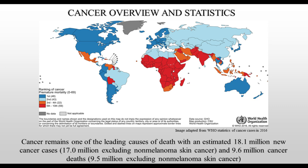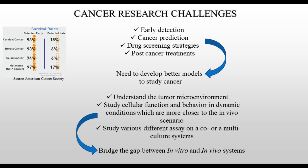Here are cancer statistics obtained by the World Health Organization, showing the prevalence of cancer throughout the globe. Premature mortality rates are significantly higher. Cancer is the number one leading cause of death in 48 countries indicated in blue, the second leading cause in countries marked with light blue, and the fourth and fifth leading cause in countries marked in orange and red. It is expected that by 2020, there will be 18.1 million new cases with 9.6 million deaths due to cancer. Therefore, cancer research is one of the major priorities in developed and developing nations.